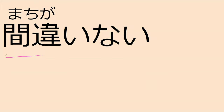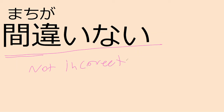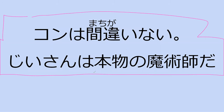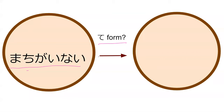Machigai-nai is 'not incorrect' — in other words, to be correct. Can you read this for me? 'Kon wa machigai-nai. Jisan wa honmono no majutsushi da.' What does this mean? Kon was right — the jisan is a real magician. Perfect. What do you think is the te-form of machigai-nai? Machigai-naku — hi, so officially te-form would have te with it, but theoretically it is -kute.